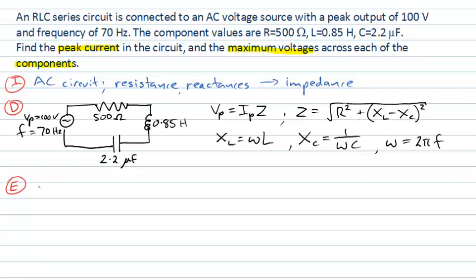The first thing we might like to do here is to calculate those reactances because we're going to need them to find the impedance, which we will need to find the current. So our inductive reactance here, remember, is omega L, which is 2 pi F times L, and we have all of those values from our problem. That's 2 pi times the 70 hertz that our voltage source is running at times the inductance, which is 0.85 henrys, which is our SI unit of inductance. And we do that calculation and we get a value there of 374.